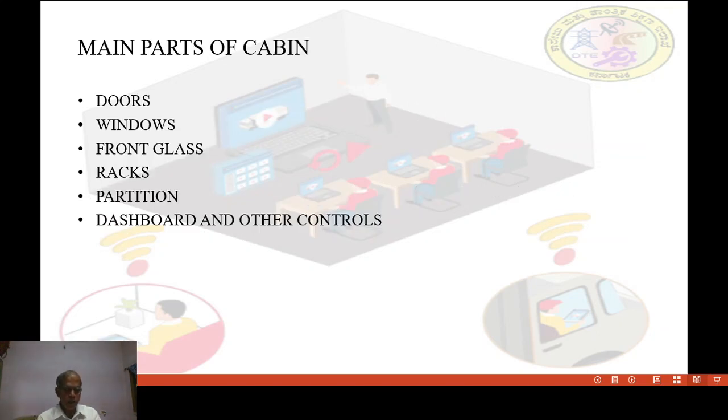Main parts of cabin: Number 1, doors. Mainly, two doors are provided, one right side for driver and left side for others.